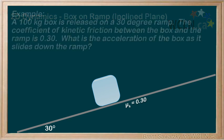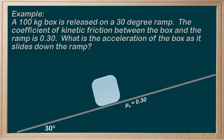Our example: a 100 kg box is released on a 30 degree ramp. The coefficient of kinetic friction between the box and the ramp is 0.30. What is the acceleration of the box as it slides down the ramp?